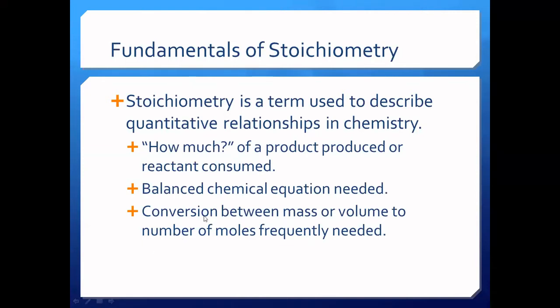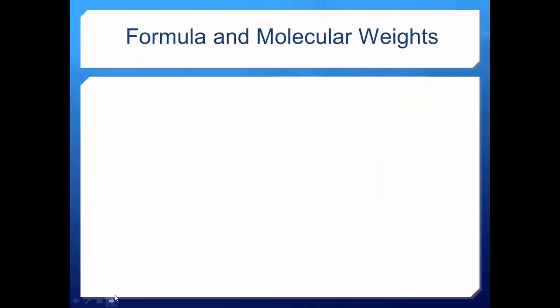Also related to this is the conversion between mass or volume to number of moles. If the original amount is in mass, you need to convert it to moles. If it's already in moles, no conversion is needed. If the original amount is given in terms of volume, you need the density of that material so that from volume you can convert it to mass, and once in mass it can be converted to moles. Volume needs density to convert to mass, and mass needs the atomic weight or molecular weight to convert to number of moles.